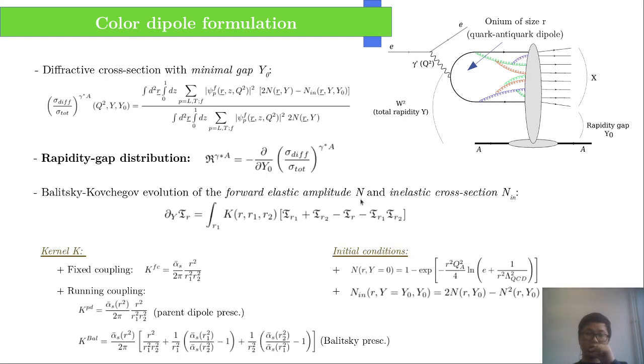In dipole formula, the dipole diffractive amplitude and the inelastic cross-section obey the same BFKL evolution equation but with different initial conditions. We consider both fixed coupling and running coupling equations, and further later we will consider the Balitsky and the parton column kernels.